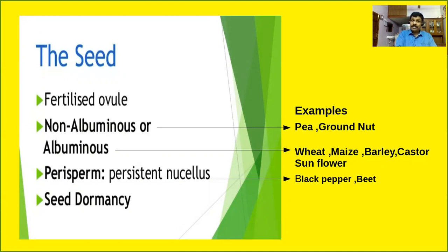The seed is the fertilized ovule, which is very important. The ovule should be converted into seeds. The seeds can be broadly classified into two categories: non-albuminous seed or albuminous seed.